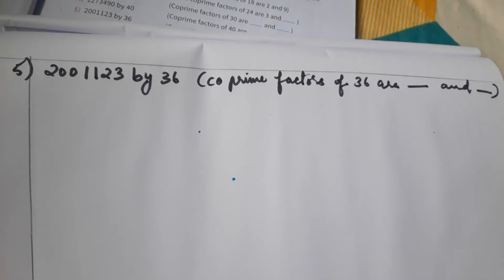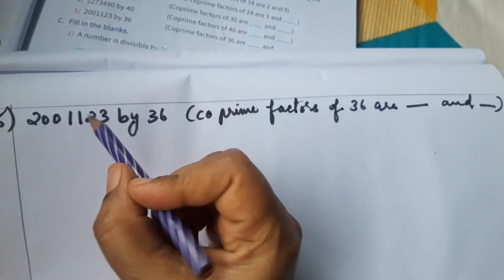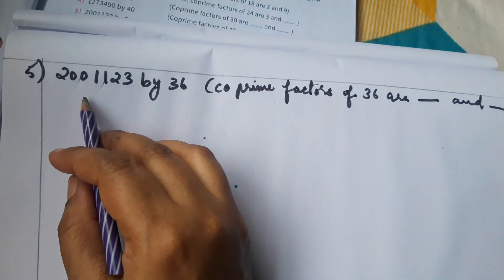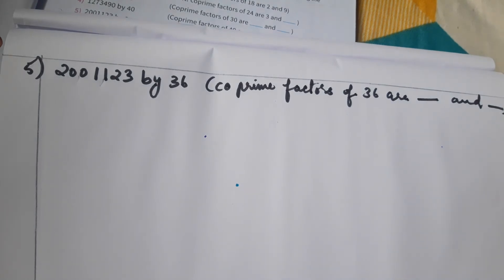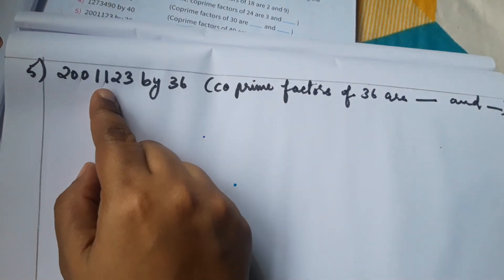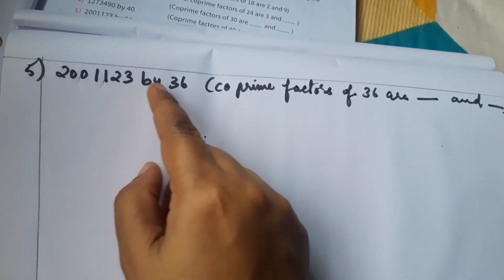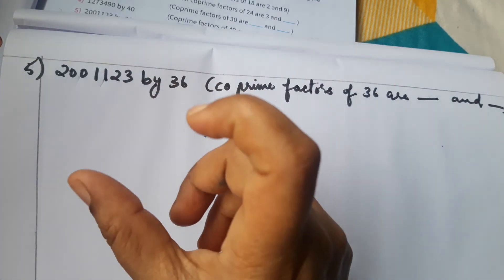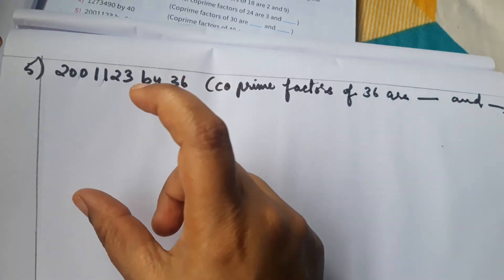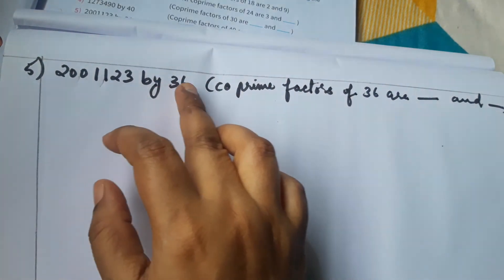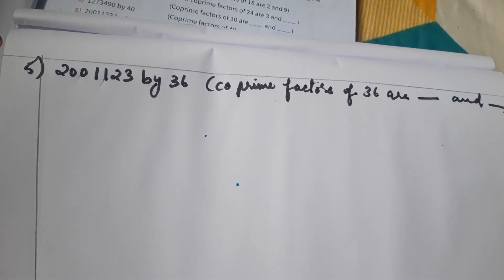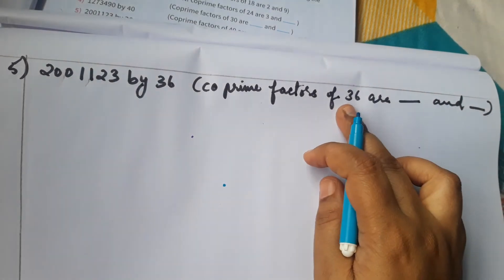Fifth and last question: 20,11,123 divided by 36 — is this number perfectly divisible by 36? It is not necessary to directly divide by 36. We find the co-prime factors of 36.